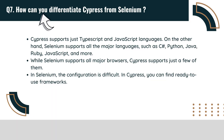How can you differentiate Cypress from Selenium? Cypress supports just TypeScript and JavaScript languages. On the other hand, Selenium supports all the major languages such as C Sharp, Python, Java, Ruby, JavaScript, and more. While Selenium supports all major browsers, Cypress supports just a few of them. In Selenium, the configuration is difficult, whereas in Cypress you can find ready-to-use frameworks.